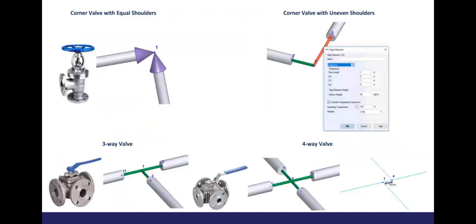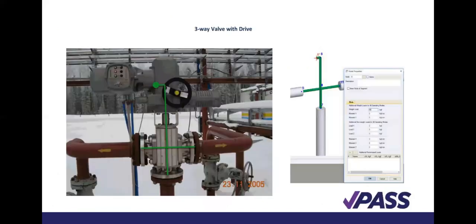Here we are looking at the corner valve. This is a very clear illustration of your valve. Look at the right-hand side — you will see how it's been illustrated. Here we also have the three-way valve with drive. This is an illustration of your three-way valve with drive. At the right-hand side, you also see the three-way drive with valve.